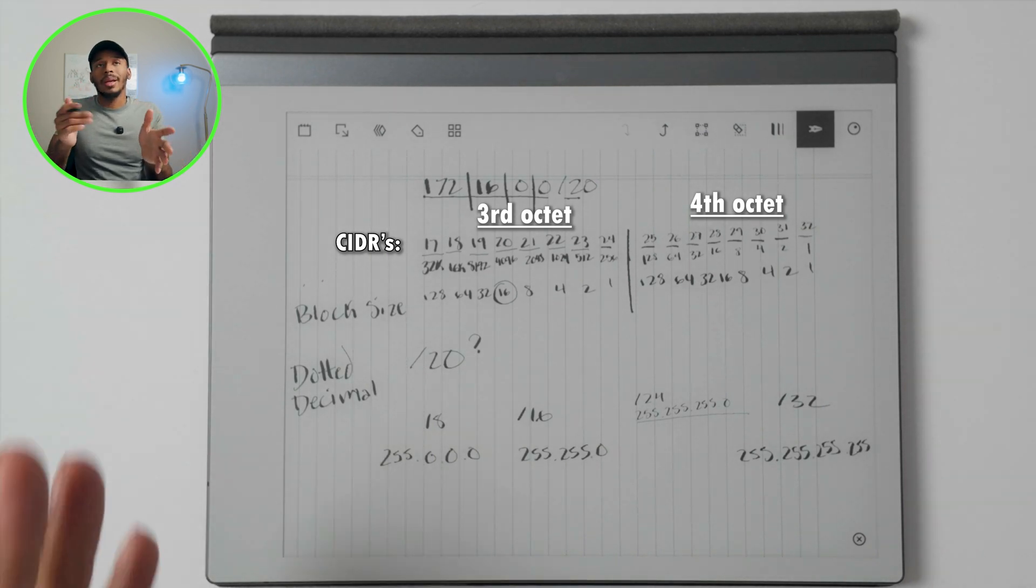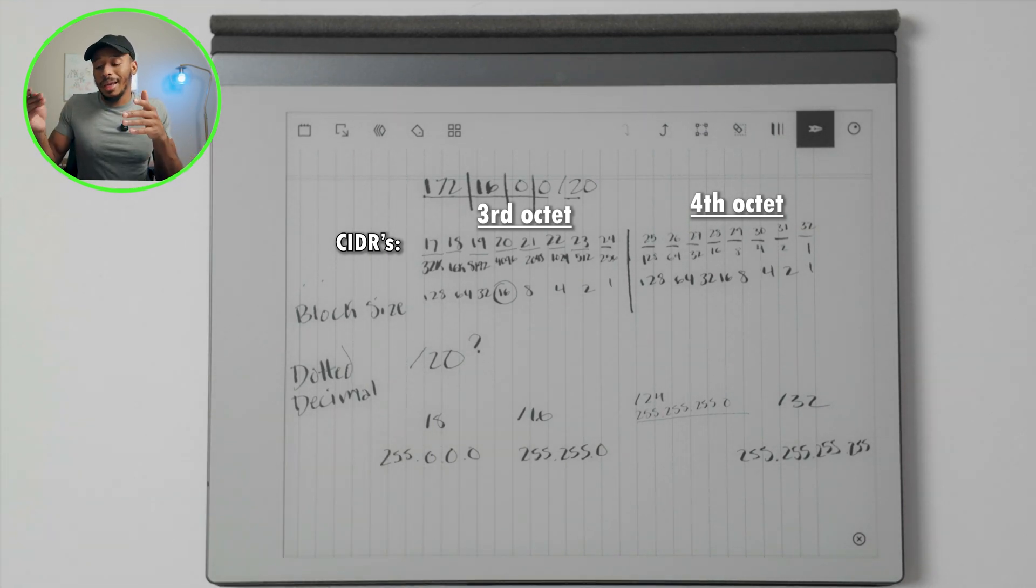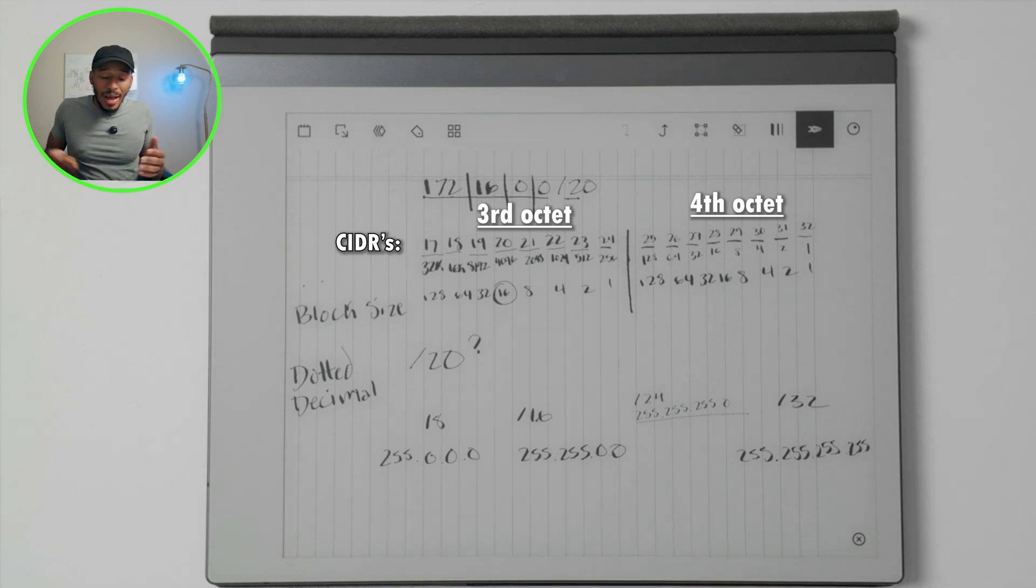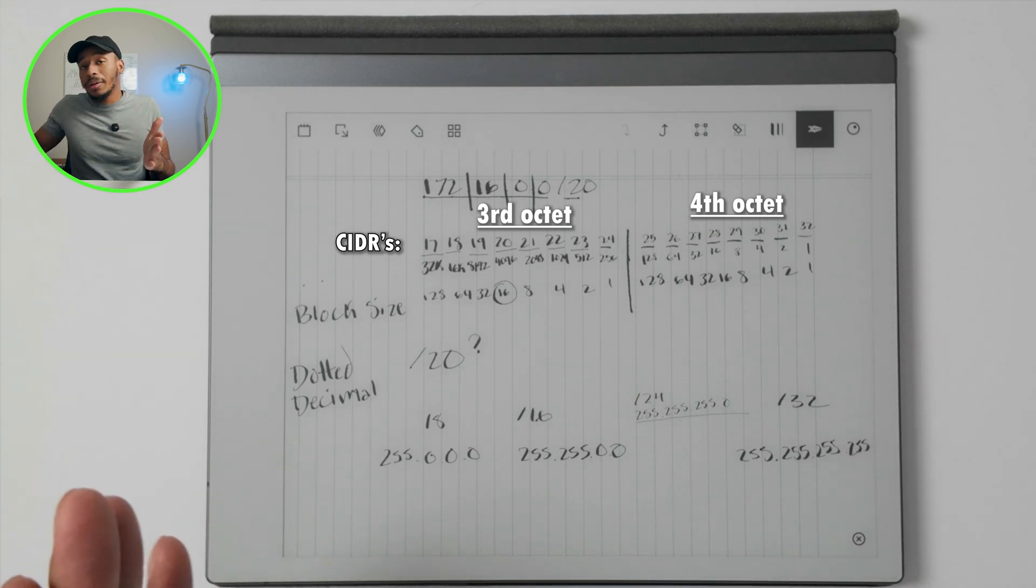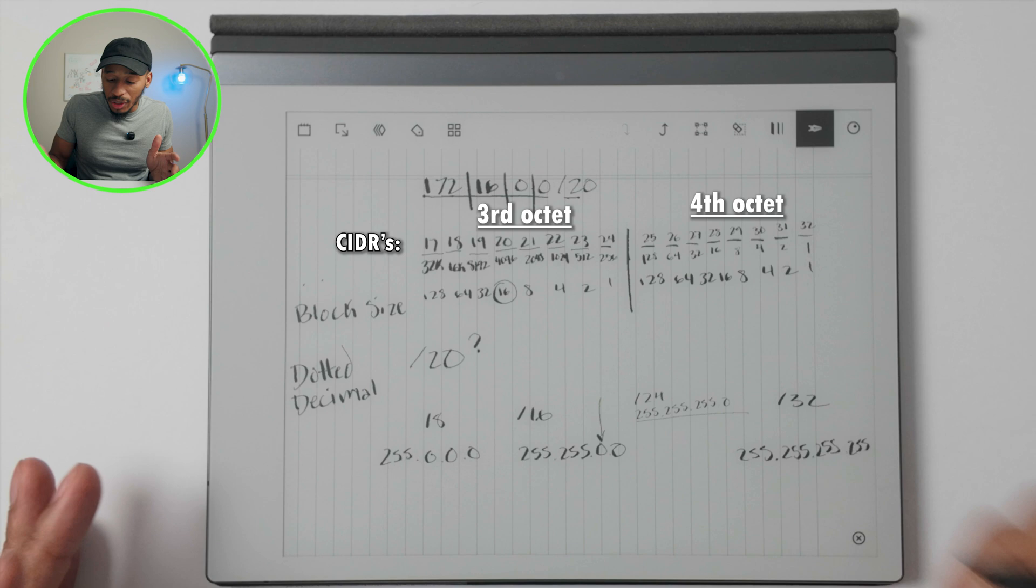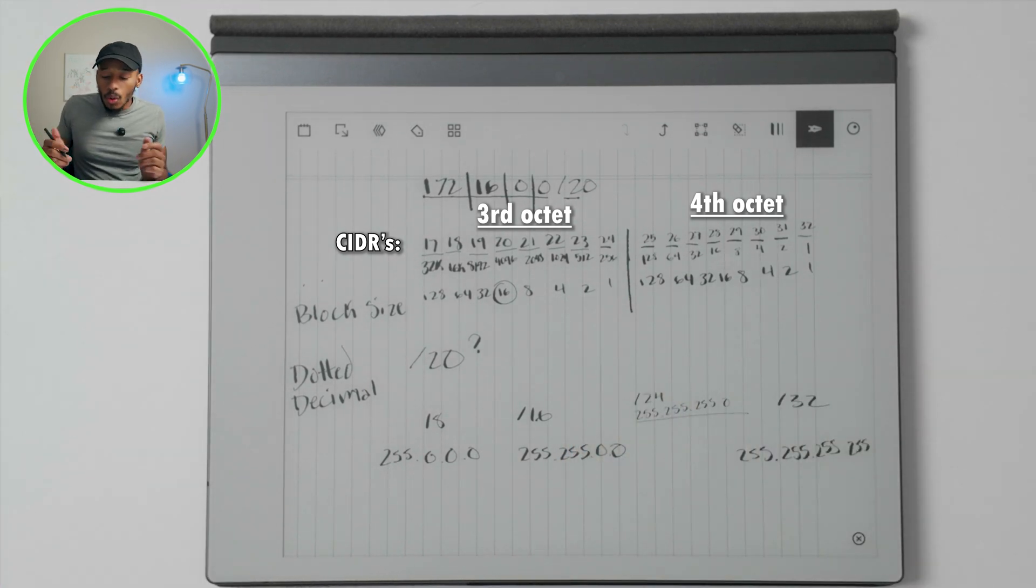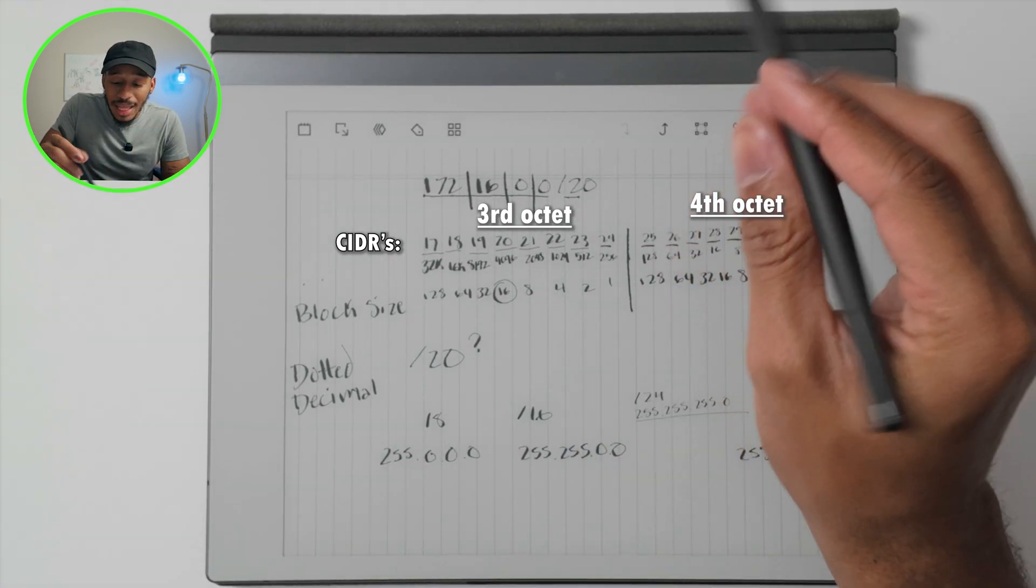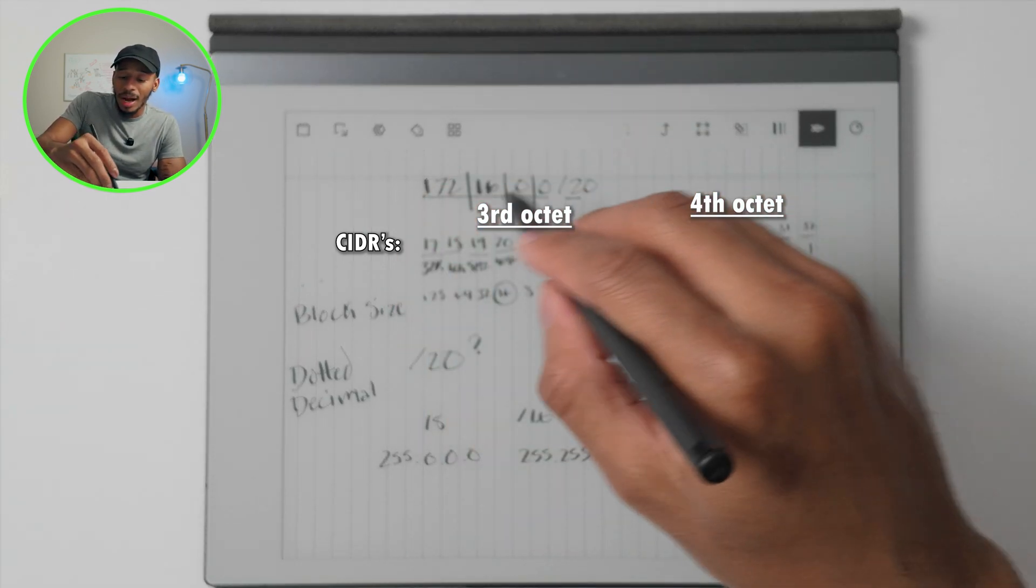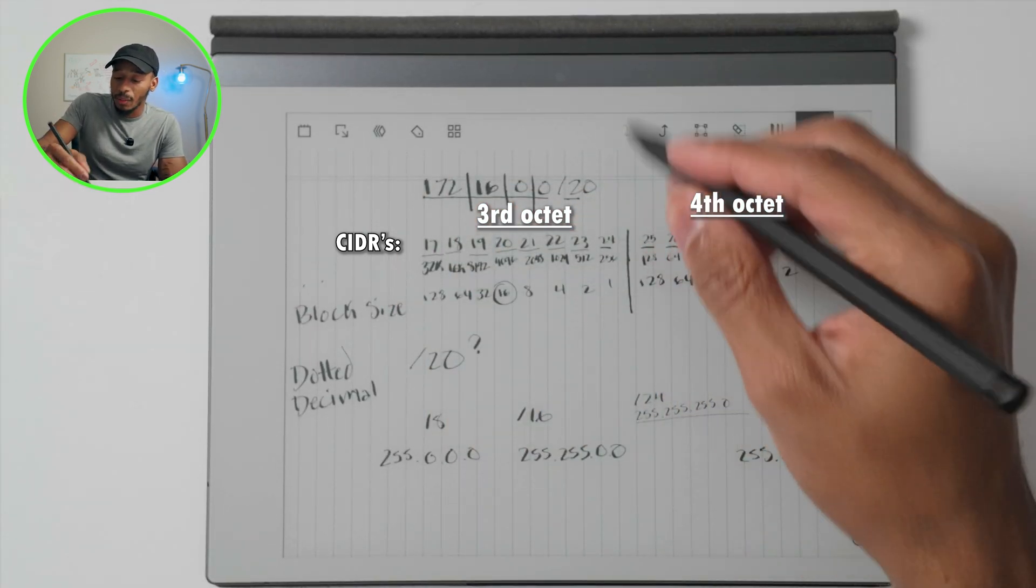I know that looks a little horrible there, but essentially we can use this as a landmark when it comes to eyeballing where this falls. If the dotted decimal has two 255s, then we know we're working with a /16 or higher, and that can be your indicator as to what octet you're working in. In this case we know that this /20 is going to fall within this third octet based off of this chart that we drew out.